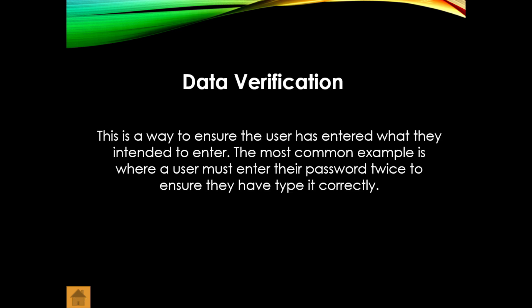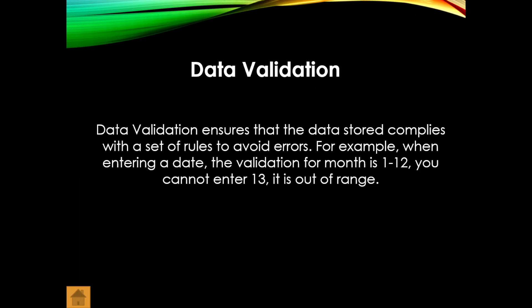There are two terms we need to know. First: data verification — this is the way to ensure the user has entered what they intended to enter. The most common example is where a user must enter their password twice to ensure they haven't typed it incorrectly. Data validation ensures that the data stored complies with a set of rules to avoid errors — like our validation rules and input masks in Access.